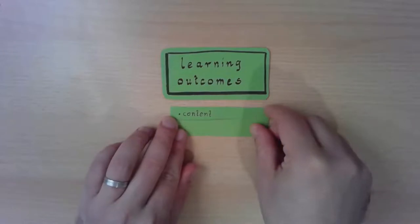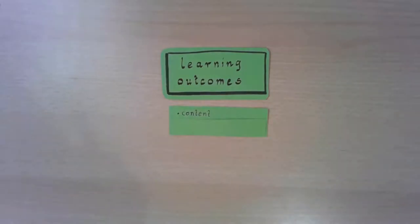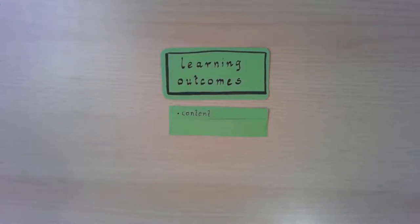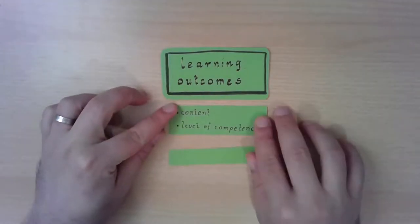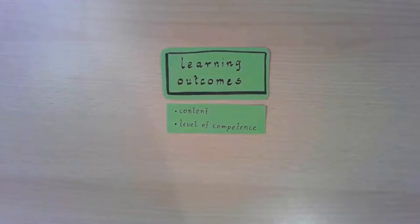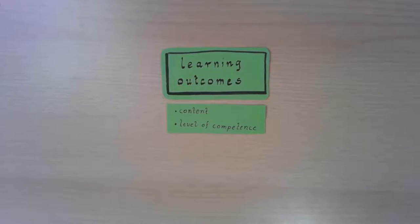Of course, this is about the content of your course — the theories, the models, the equations, and all the scientific stuff you want to teach. But this is not enough. For a good learning outcome, you also have to think about the level of competence. The question is: what should the students be able to do with this knowledge? Should they just know it and repeat it, or should they be able to apply it to any kind of situation?